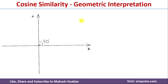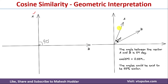We will try to understand cosine similarity with geometric interpretation. Let us say A is one vector and B is another vector. When the angle between A and B is 90 degrees, cos theta equals 0, which means A and B are independent of one another — they are not similar. If the angle between A and B decreases from 90 degrees to 59 degrees, cos of 59 is approximately 0.559, which indicates that these two vectors are 55% similar.